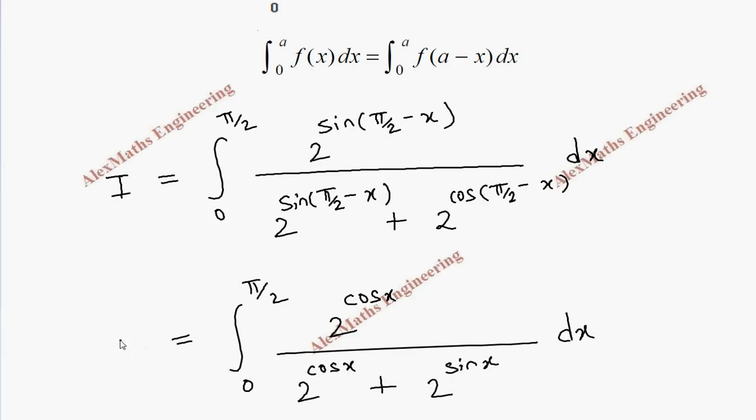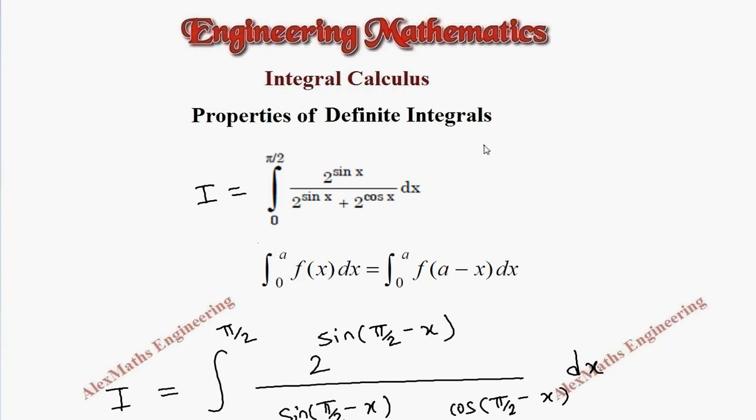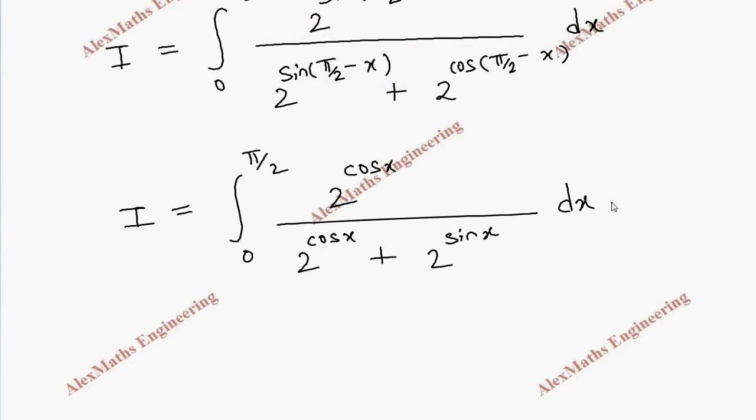Let's take the original expression as equation 1 and this as equation 2. Adding equations 1 and 2, we get 2I.